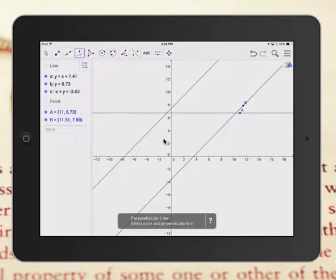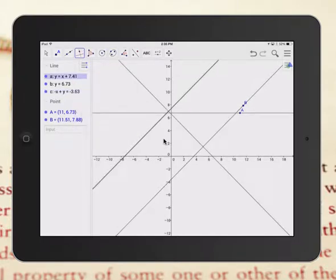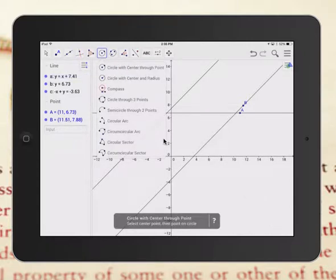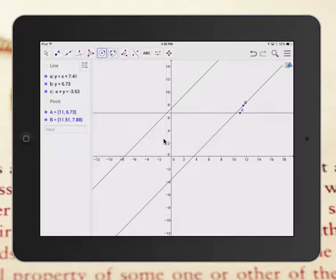You can do a perpendicular line, and you can see on the left-hand side it keeps adding all these lines to play around with. You can also do all these different circles if you're doing circles, angles...